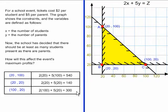I get these answers: 540, 140, and 300. If this problem was complete, I would have my answer now. Since we're trying to maximize profits, I picked the largest number. 540 dollars would be the maximum profit, and it would be earned by selling 20 tickets to students and 100 tickets to parents.